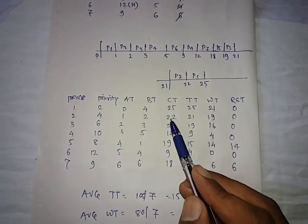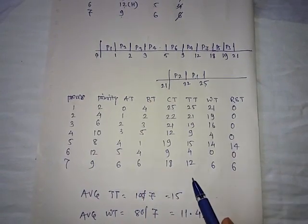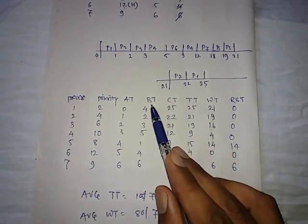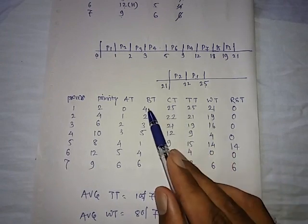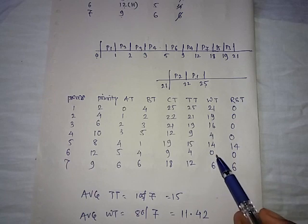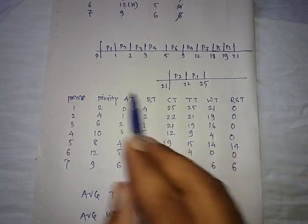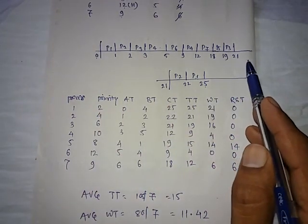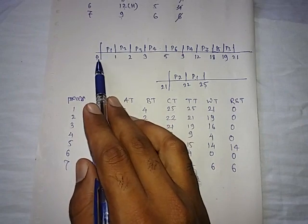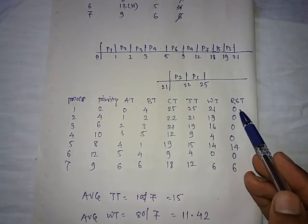Continuing turnaround time: for P3 it is 21 minus 2 equals 19, and the remaining processes follow the same formula. Waiting time is calculated as: waiting time equals turnaround time minus burst time. For P1: 25 minus 4 equals 21. For P2: 21 minus 2 equals 19. Response time is the first instance of the process from the left side of the Gantt chart minus its arrival time. P1 first occurs at time 0, arrival time is 0, so response time is 0 minus 0 equals 0.